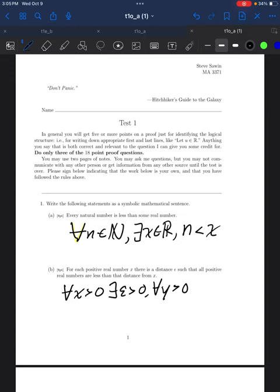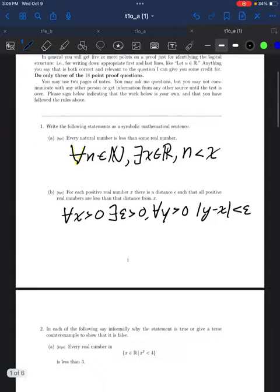are less than that distance from x. The distance of that number from x is the absolute value of y minus x, and distance less than epsilon would be written like this.